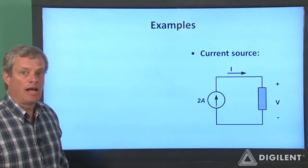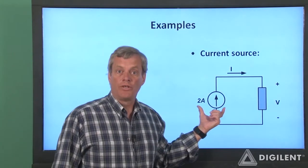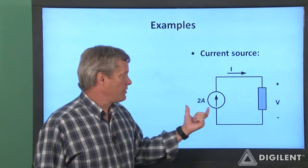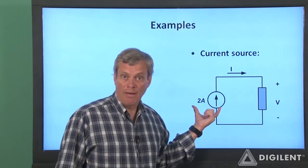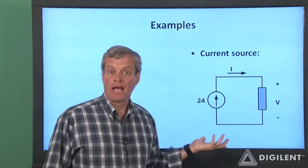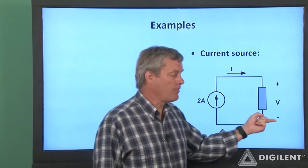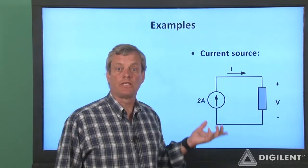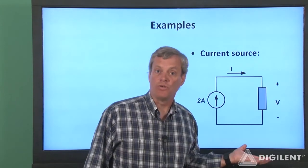Our second example is an ideal current source, also connected to some unspecified circuit component. Since the current source always delivers 2 amps, we know that the current I through the component is 2 amps. However, we don't know anything about the voltage across the circuit component. The voltage across the source is set entirely by the component it's connected to, and we don't know anything about the circuit element itself.